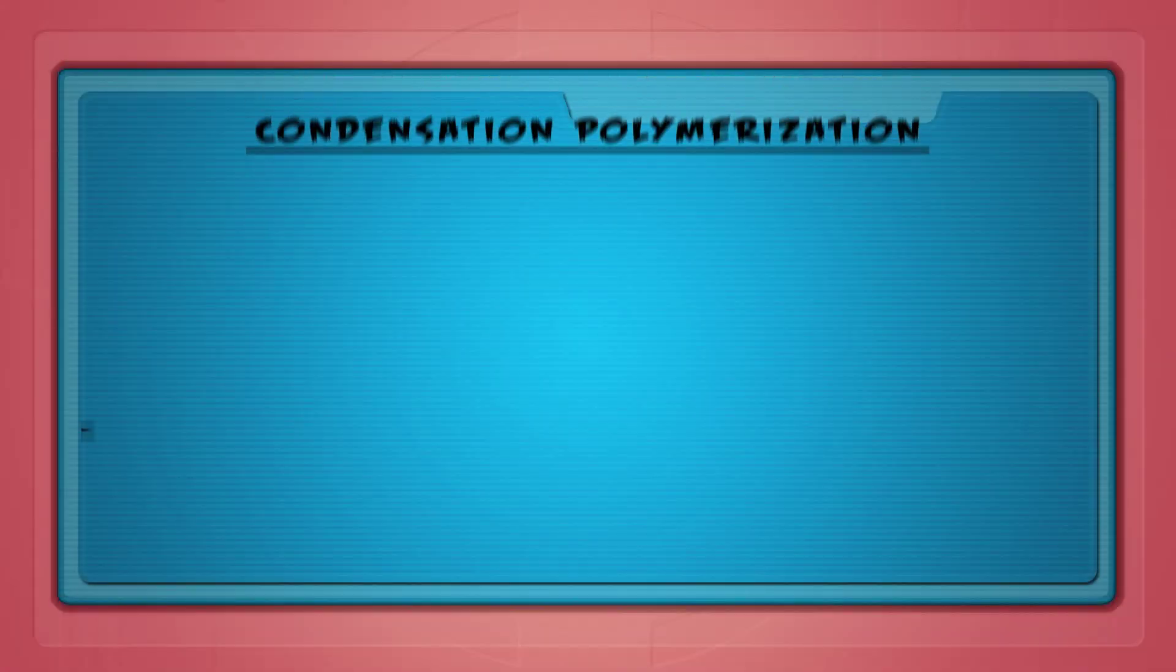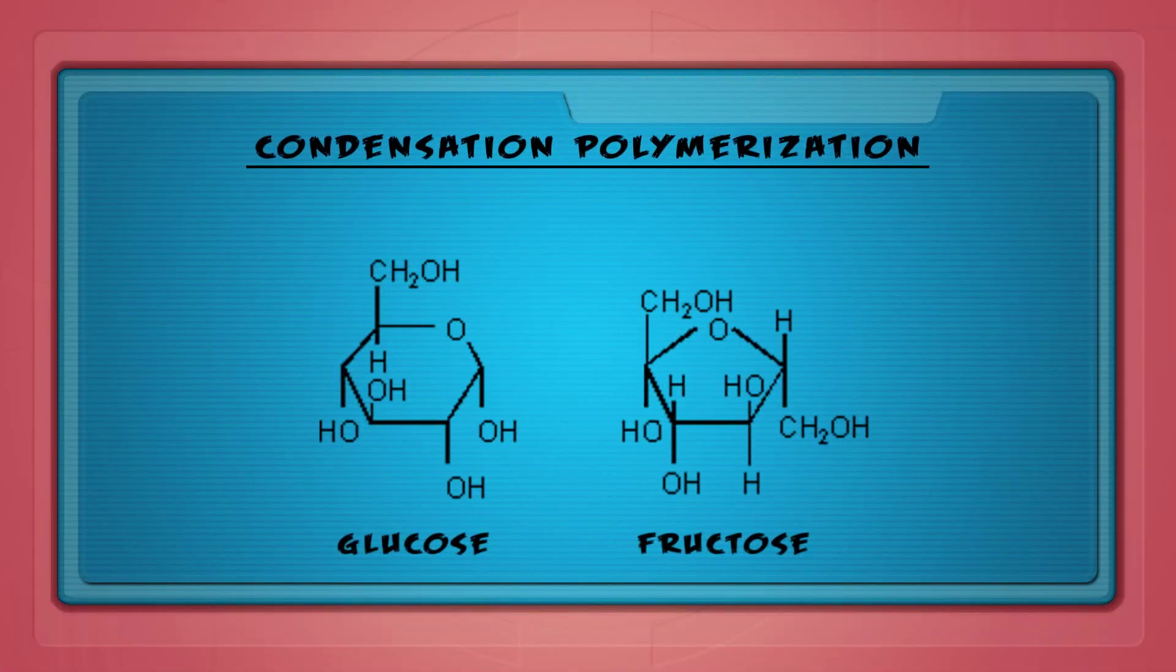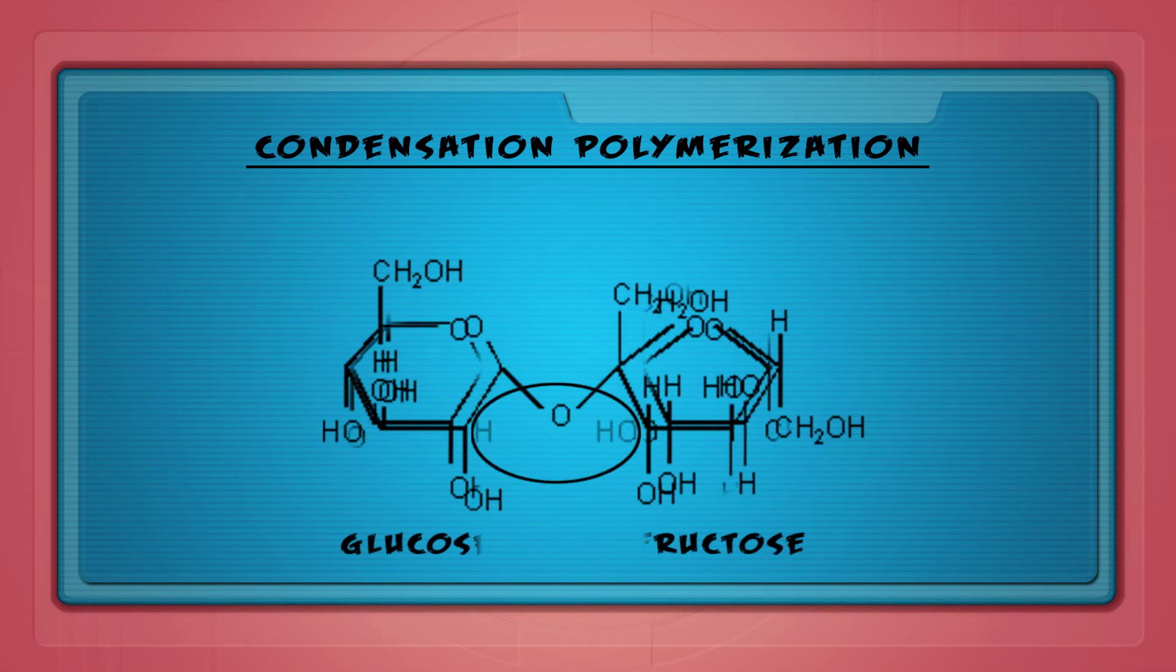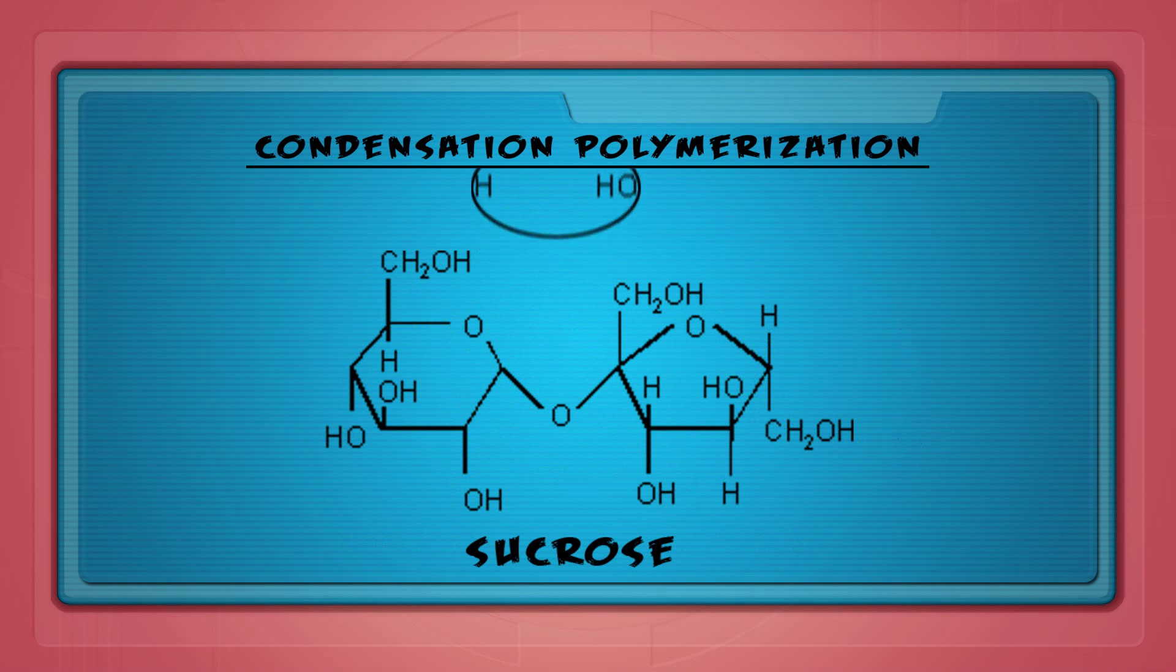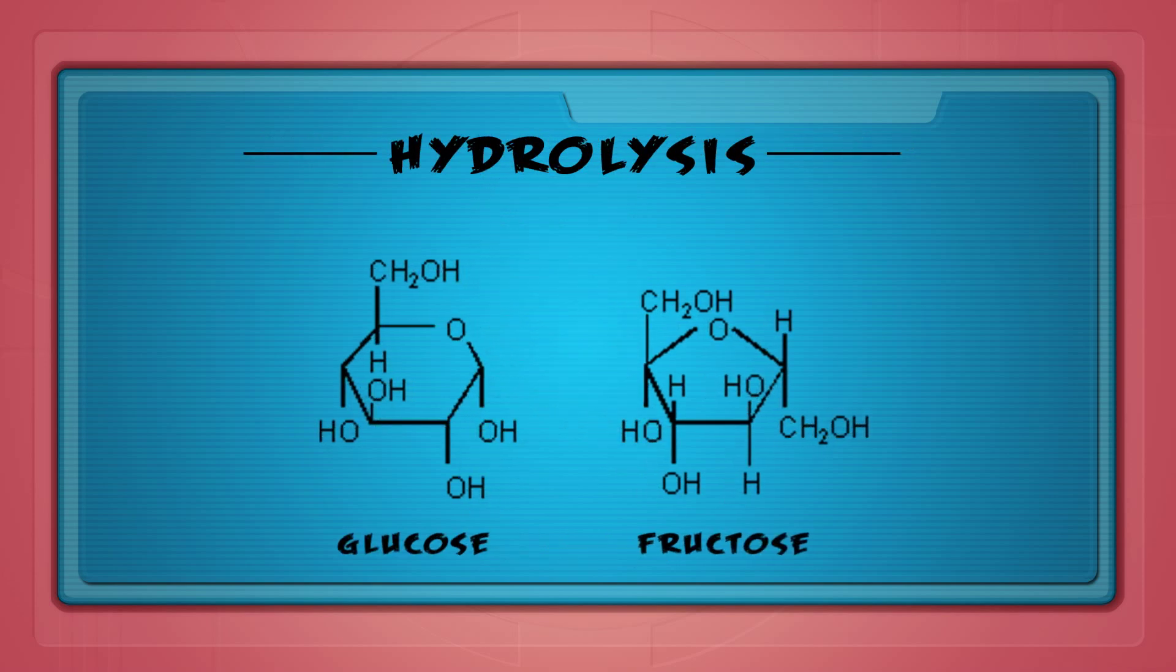A common disaccharide is table sugar, or sucrose. It's made of the combination of a glucose molecule and a fructose molecule through a type of chemical reaction called condensation polymerization. This is the opposite of hydrolysis because a water molecule is released instead of being used in the reaction. During digestion, sucrose is broken down through hydrolysis.